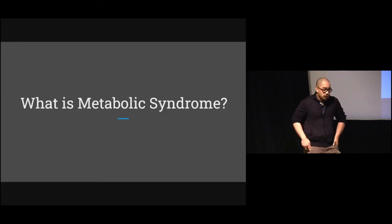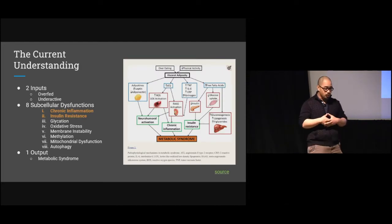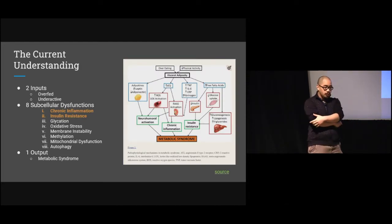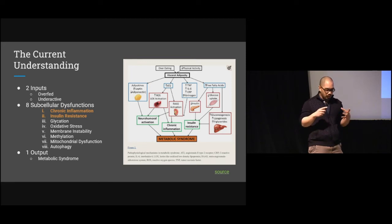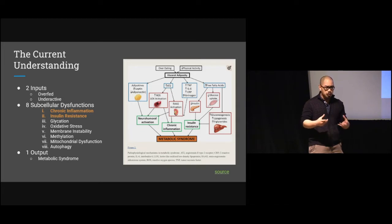So metabolic disease — what is metabolic syndrome? Basically, once upon a time, we realized that hypertension, diabetes, obesity, sometimes liver disease, sometimes thyroid things, sometimes gout, clustered together in a meaningful way. We weren't quite sure what that was, but then we realized there might be a common factor.